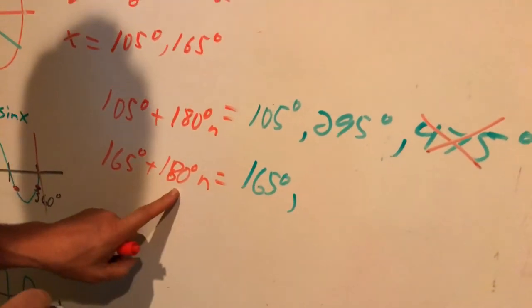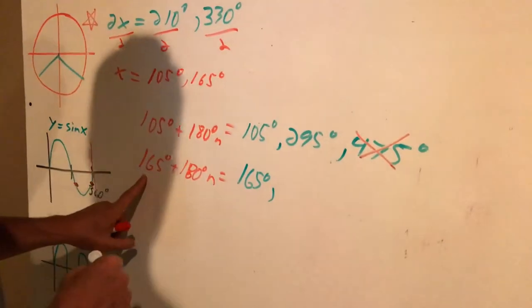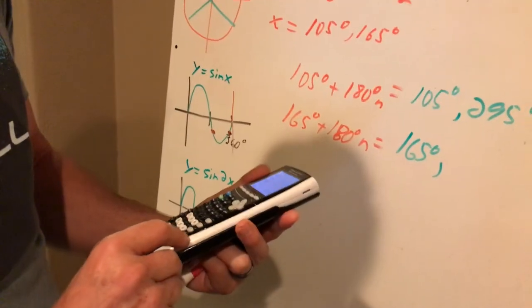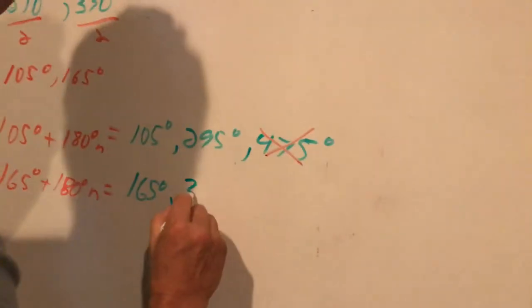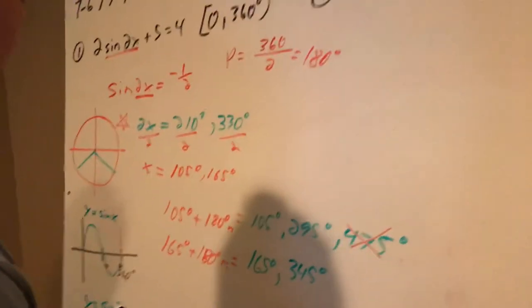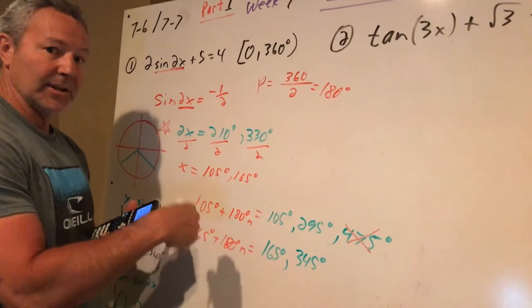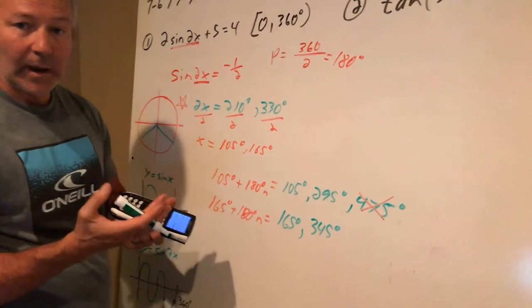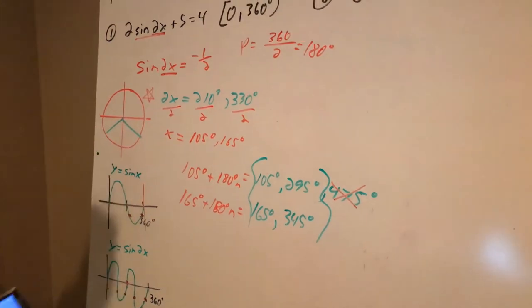I'm going to add 180 to that. 165 plus 180 is 345. If I add 180 again, it'll be out of the range. I'll also want you to note that if I add 180 one time and 180 another time, I've added 360 to something. That would obviously be more than 360. So anytime I've added it twice, it's too much. So these here are my answers.